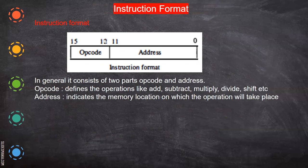An instruction format defines the structure of an instruction — similar to how a high-level language like C or C++ has a specific syntax. For example, a while loop has a format: while, open bracket, open curly brace, the statements, then close curly brace. Similarly, machine code also follows a format given by the manufacturer, and based on that syntax you have to write the program.